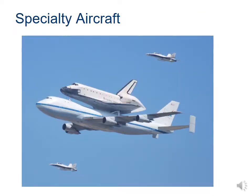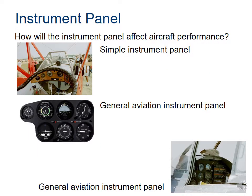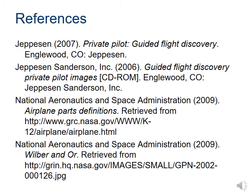A Boeing 747 has been modified to strap a space shuttle to the top — this was the final flight of the space shuttle Endeavour landing in Los Angeles in September 2012, with the plane specifically configured to carry something on its top. Finally, an instrument panel can range from simple to a general aviation panel with the same six instruments — called a 'six pack' — used for all of flight. PowerPoints are available in your PLTW account for reference.